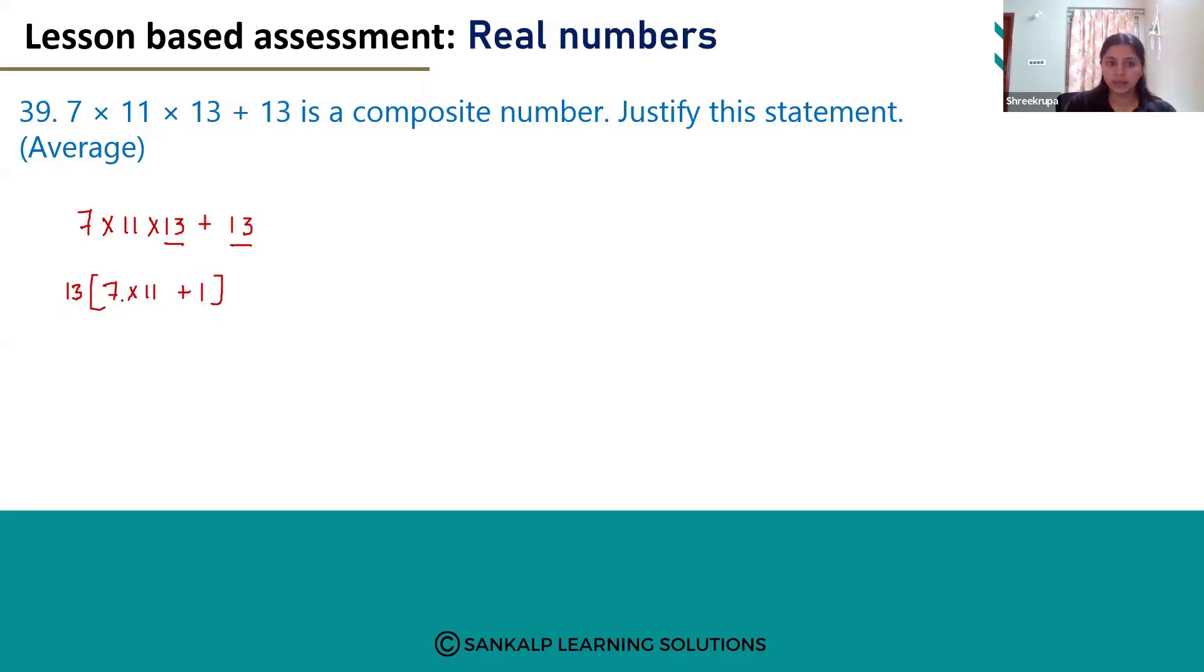13 multiplied by 7 into 11 plus 1. 7 into 11 will become 77 plus 1 into 13. So the final answer will become 13 into 78. This is 13 into 78.